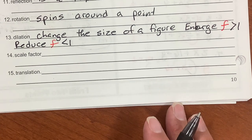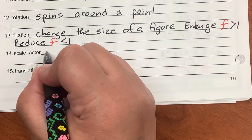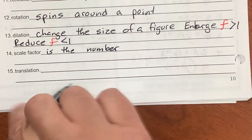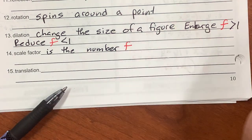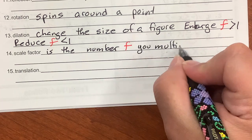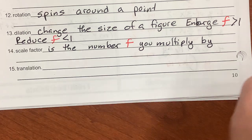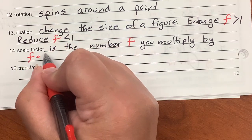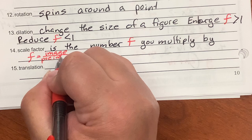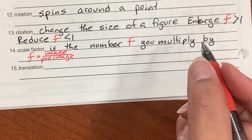Scale factor is the number we're calling F that you multiply by. The way you find the scale factor: F equals the image divided by the pre-image. So if the image is bigger and you divide it by a smaller number, you know it got larger.